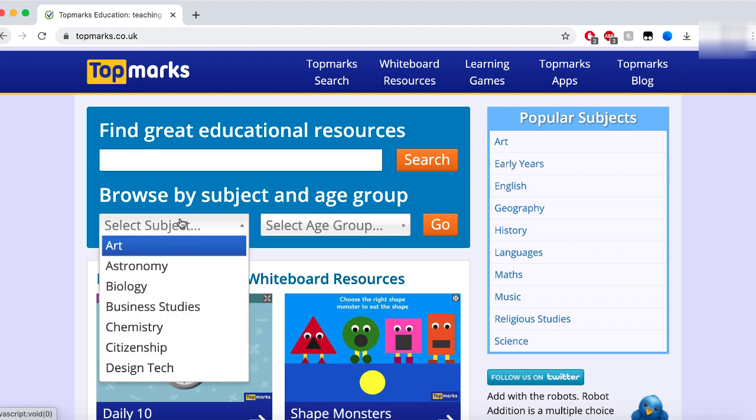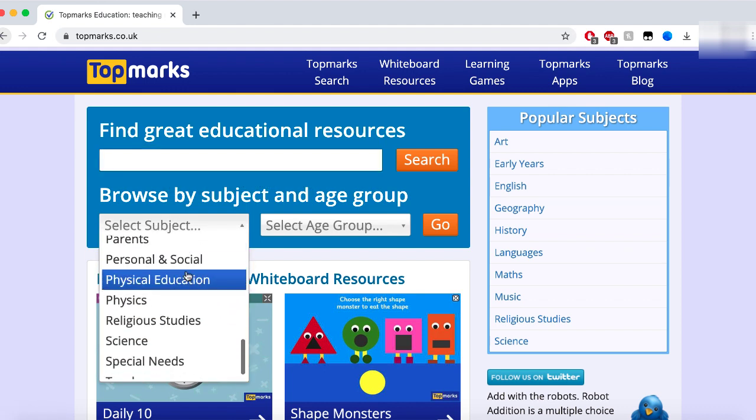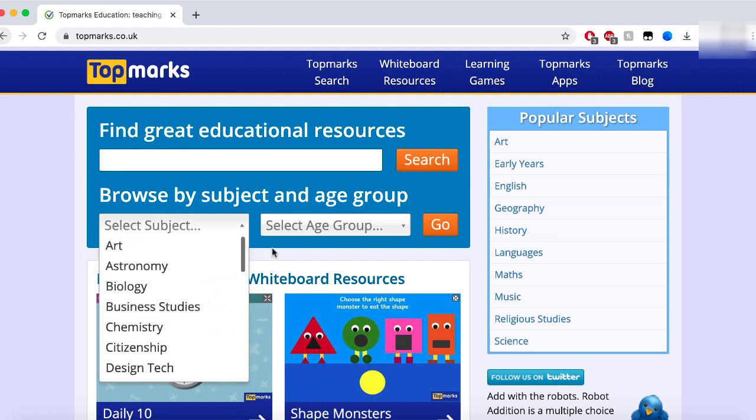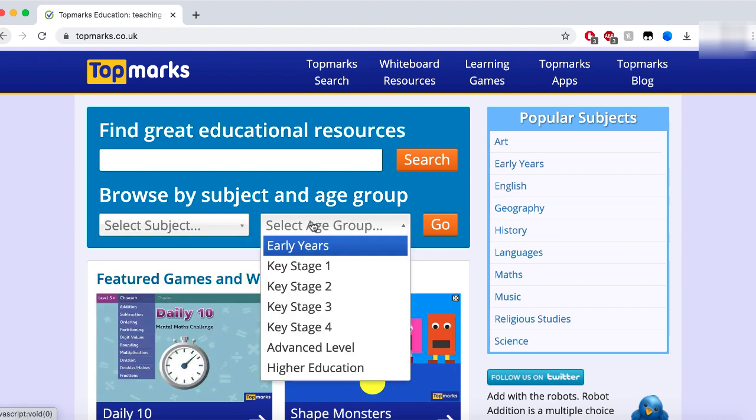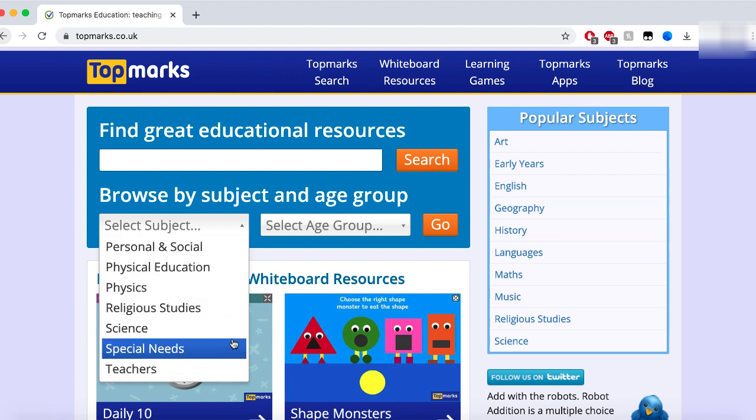There's a subject selector if you're looking for a bit of inspiration, a list of different subjects here, and there's also an age group selector which coincides with the English education system but still relevant enough for us to use depending on the age and stage of your child. There's even a section here for additional support needs as well should you wish to look at those activities also.